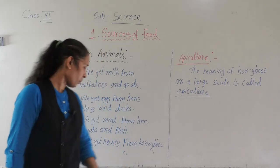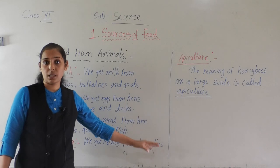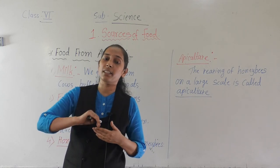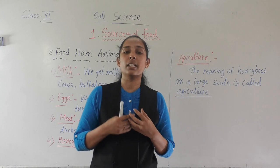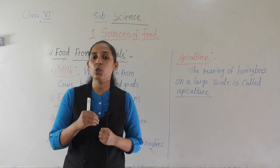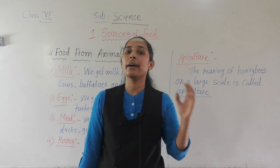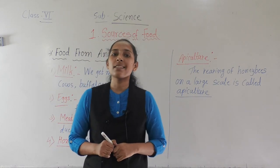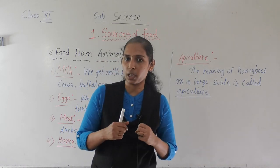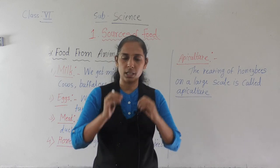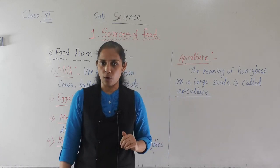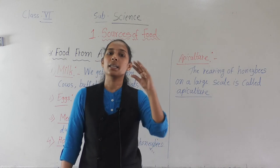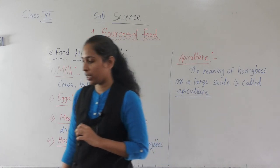The next important food item is honey. Everyone knows that honeybees give us honey. But how do honeybees produce honey? Honeybees collect nectar from flowers. Nectar is the sweet juice present in a flower. Honeybees collect that sweet juice — the nectar — and store it in their house, which we call a hive.